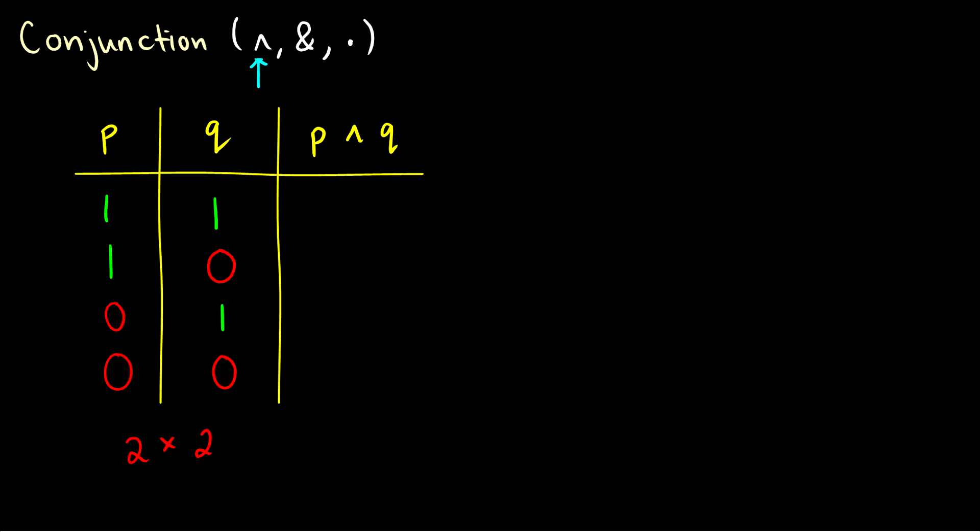If we had another statement r, then we'd need another doubling because r can be true or false, and we need eight total rows. So the number of rows is equal to 2 raised to the number of statements. So that's just building a truth table.